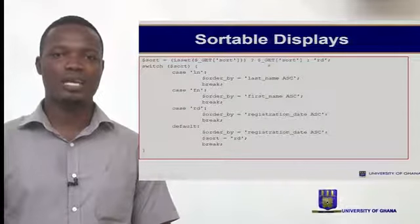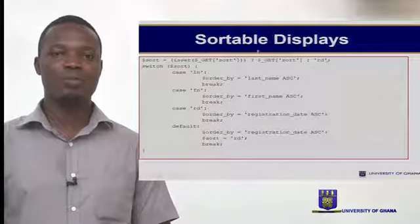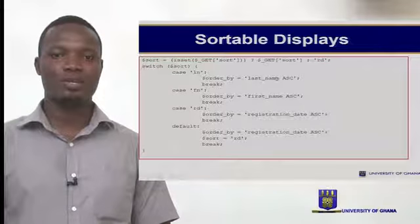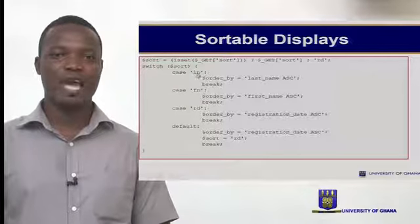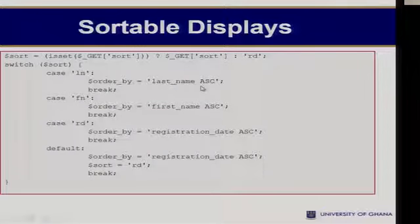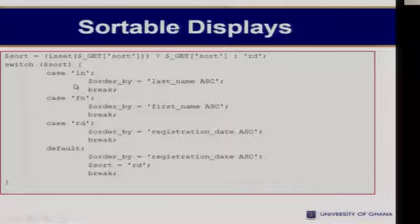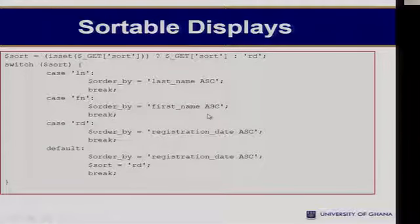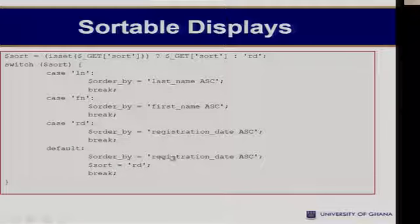In a case where we want to sort data, it's wise to use variables that tell us what sort of ORDER BY clause to append to the SQL we'll use to fetch data. If we have 'LN', then we want to sort by last name. This means there's a GET variable called 'sort' which would be equal to one of these parameters: either LN, FN, or RD. If it's LN, we sort by last name ascending. If it's FN, we sort by first name ascending. If it's RD, we sort by registration date. If none has been set, then we just order by registration date.